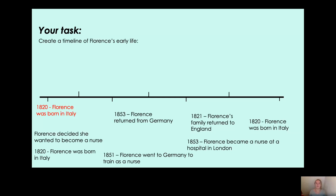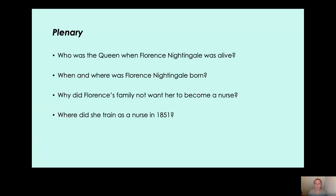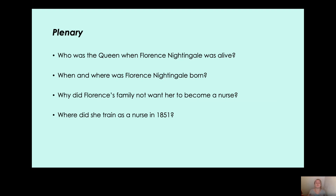Just the last little part of the lesson. At the beginning I said that by the end of the lesson you'd be able to tell me some facts about Florence Nightingale. Here are some questions to answer and write down: Who was the queen when Florence Nightingale was alive? When and where was Florence Nightingale born? Why did Florence's family not want her to become a nurse? And where did she train as a nurse in 1851? Hopefully you'll be able to answer all of these. When you've finished your timeline and these questions, please send them to the office because I love seeing all the work you're doing at home.